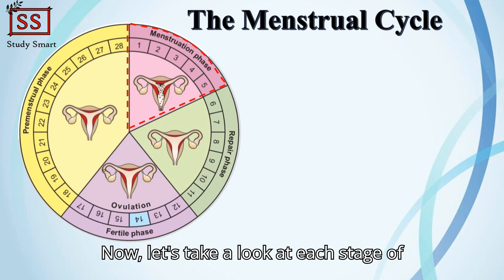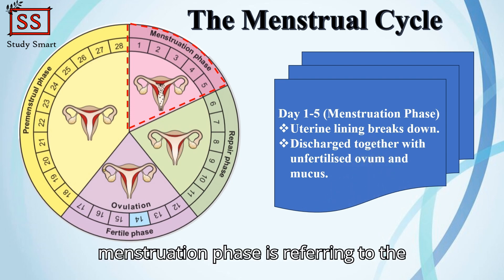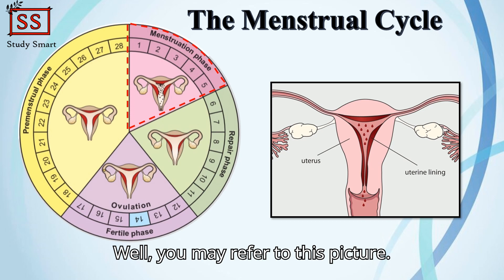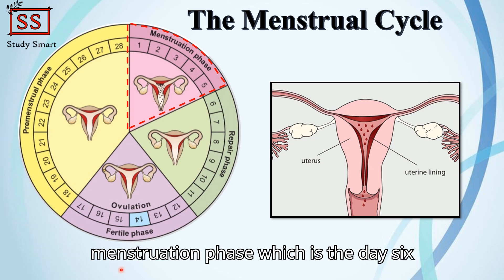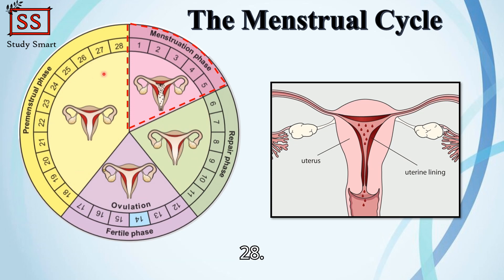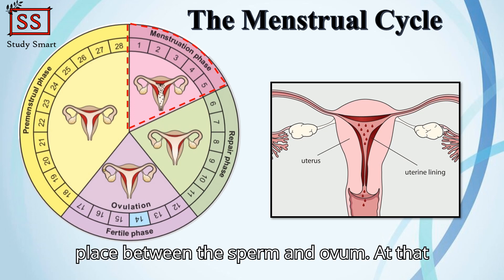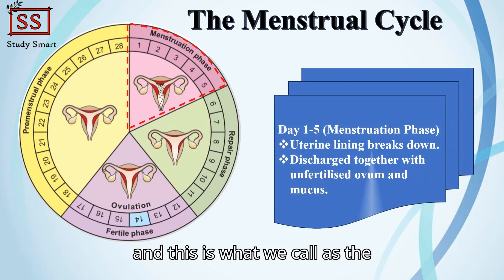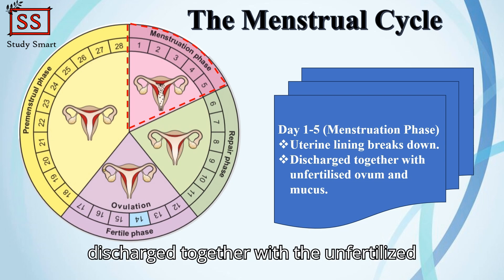Now let's take a look at each stage of the menstrual cycle. The first stage is known as the menstruation phase, which refers to the breaking down of the uterine lining. The uterine lining is the inner layer of the uterus — you may refer to this picture. It will thicken right after the menstruation phase, from day 6 onwards, until the menstrual cycle completes on day 28. After day 28, the menstruation phase will repeat if no fertilization takes place between the sperm and ovum. The uterine lining will break down and this is what we call menstruation or a period. During this phase, the uterine lining is discharged together with the unfertilized ovum and mucus.